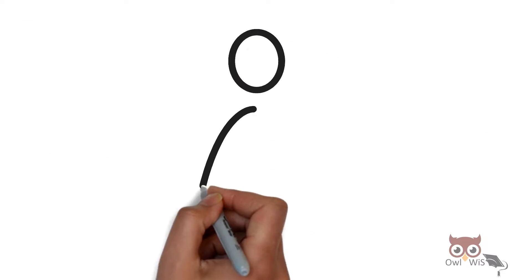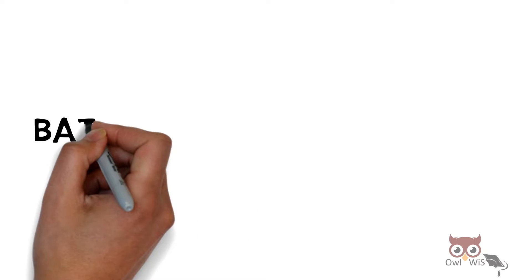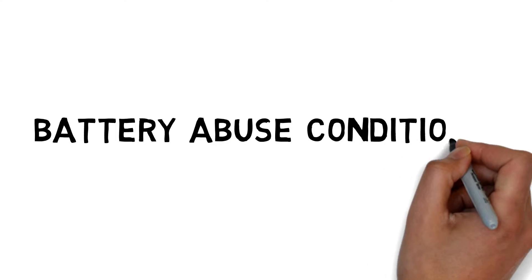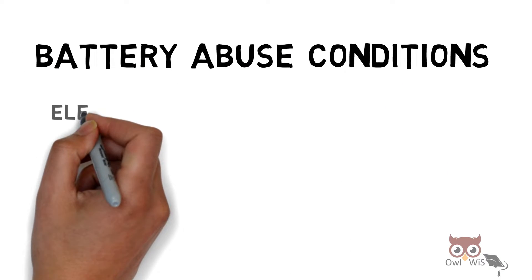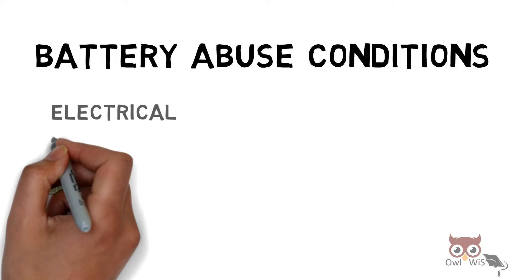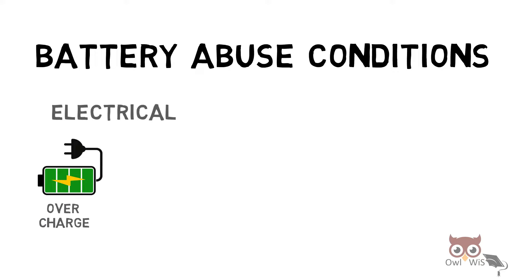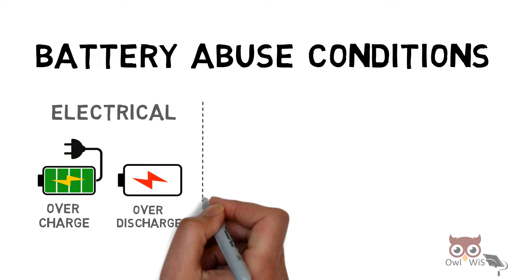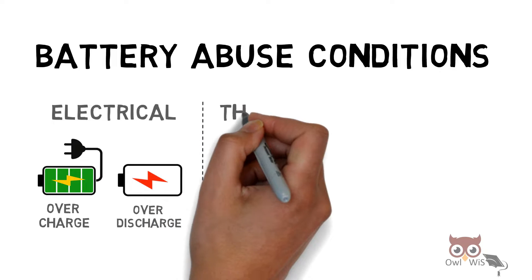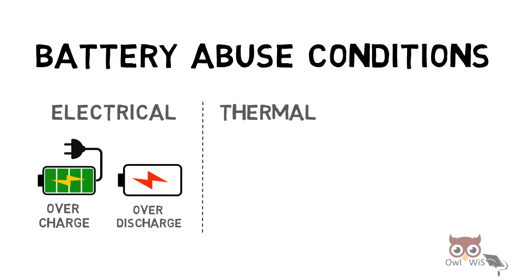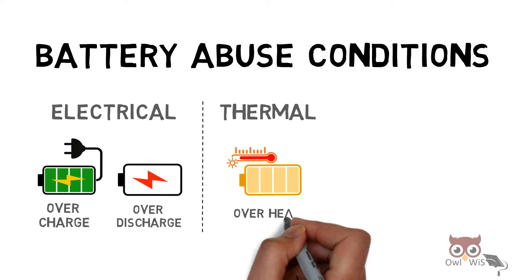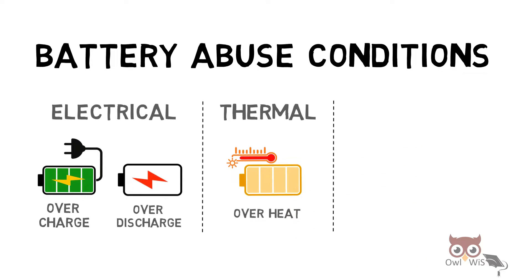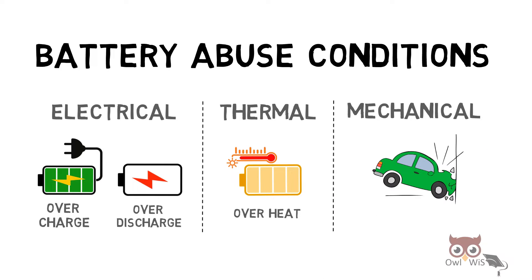It all starts when one of the battery abuse conditions occur. First, electrical abuse, which occurs when the battery is overcharged or over-discharged. Next, thermal abuse, which occurs when the battery is overheated. Next, mechanical abuse, which occurs when the car meets with an accident or crash, damaging the battery.